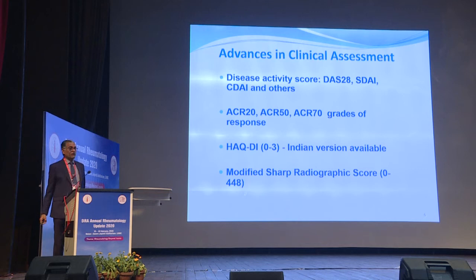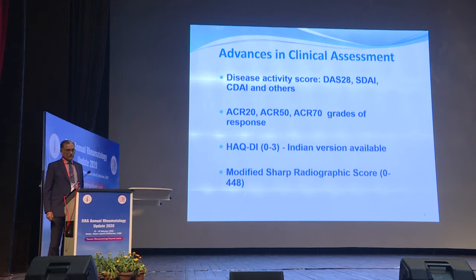We now have means of measuring rheumatoid arthritis activity. Scores like DAS-28, simplified disease activity index, and clinical disease activity index are available. The American College of Rheumatology also defined ACR 20, ACR 50, and ACR 70 grades of response when treating.